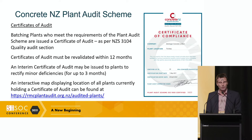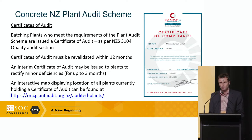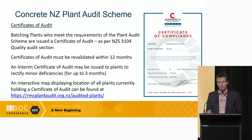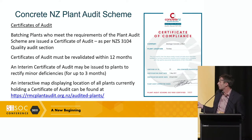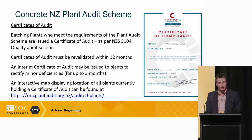When it's all successful, a certificate of audit is issued — it's actually called a certificate of compliance on our certificate, which is a bit of a mystery. Batching plants that meet the requirements of the plant audit scheme are issued a certificate of audit as per the NZS 3104 quality audit section. These must be revalidated within 12 months. For those that may have issues to rectify, an interim certificate of audit may be issued for up to three months. One of the key things is it lists the concrete strength it's certified to — typically most are 50 MPa, with a few around 40 MPa. We also have an interactive map on our website showing where all these plants are located across the country.